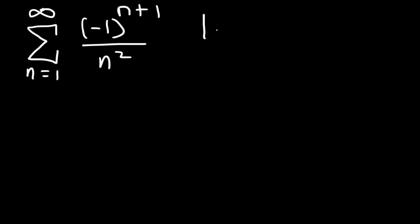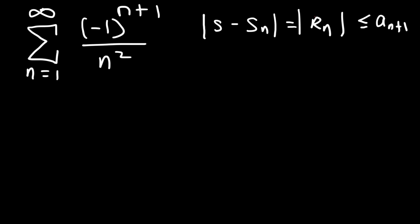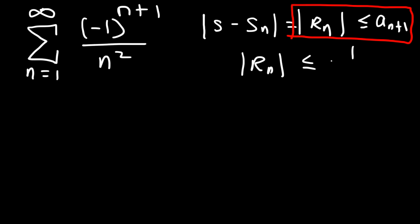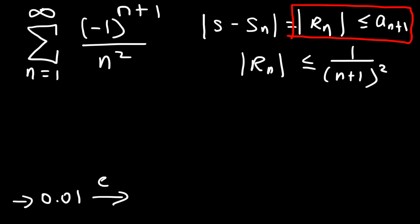Let's start with this expression. The difference between the infinite sum and a partial sum equals the remainder, which is less than or equal to a sub n plus 1. Now a sub n is 1 over n squared, so a sub n plus 1 is 1 over n plus 1 squared. We want it accurate to two decimal places, so we want the error to be within 0.001, just to be on the safe side. So I'm going to set r sub n equal to 0.001 and solve for the value of n.